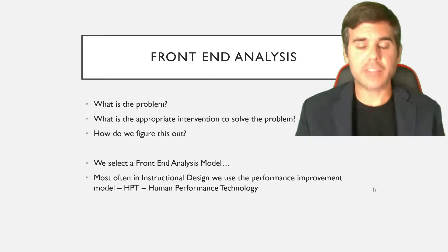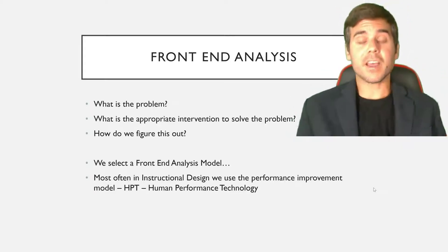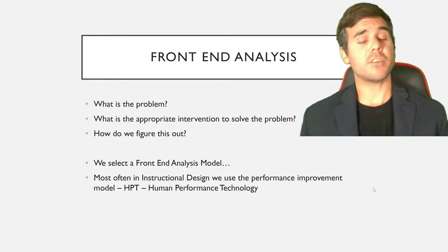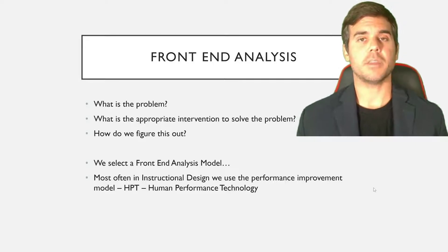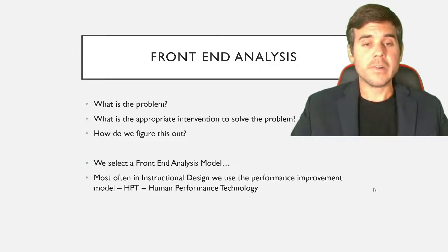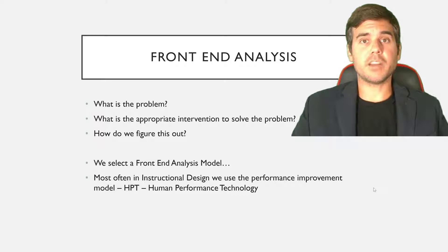So how do we begin a performance analysis? How do we figure out what the problem is? Many times the client's going to come to us and tell us they have the problem and tell us what the solution is. And sometimes they'll come to us and say we don't know what the problem is, we want you to determine it. But you always go in having to ask yourself, I'm going to determine what the problem is. So the first thing we do is we select some kind of front-end analysis or performance analysis model. We use some kind of model to help guide us into figuring out what the problem is because there are a bunch of ways to do it.